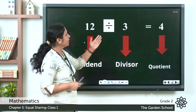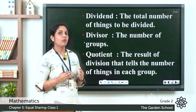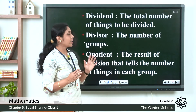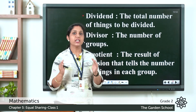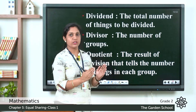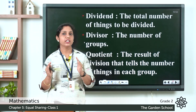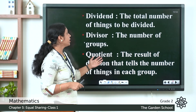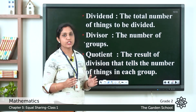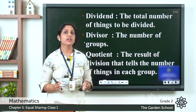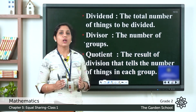Let's review the terms: the dividend is the total number of things to be divided, and it is written first. The divisor is the number of groups. The quotient is the result of division — it tells us the number of things in each group.